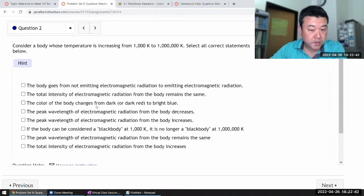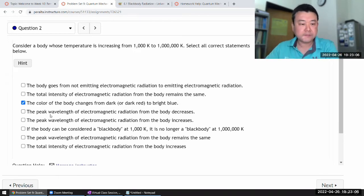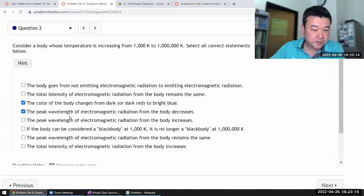The color of the body changes from dark or dark red to bright blue. Guess that's about right. Red is the cooler body's color. And the blue or white is where the hotter objects would be. The peak wavelength of the electromagnetic radiation decreases. Yeah, shorter wavelength decreases. There's something called the Wien's displacement law that also describes the relationship. So this is not correct. It's the inverse of that.